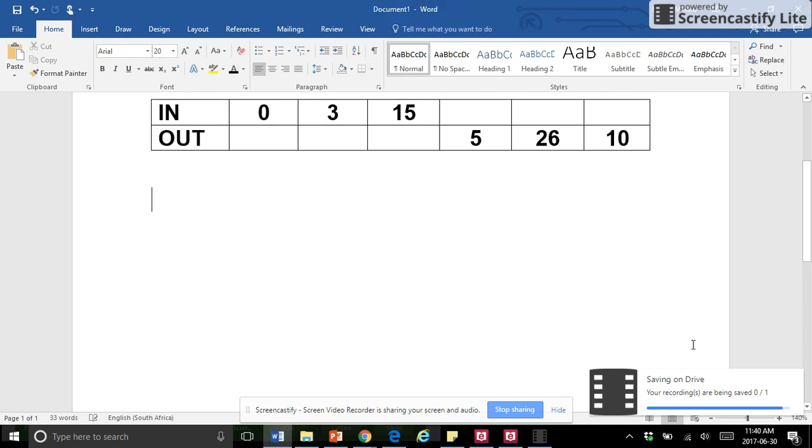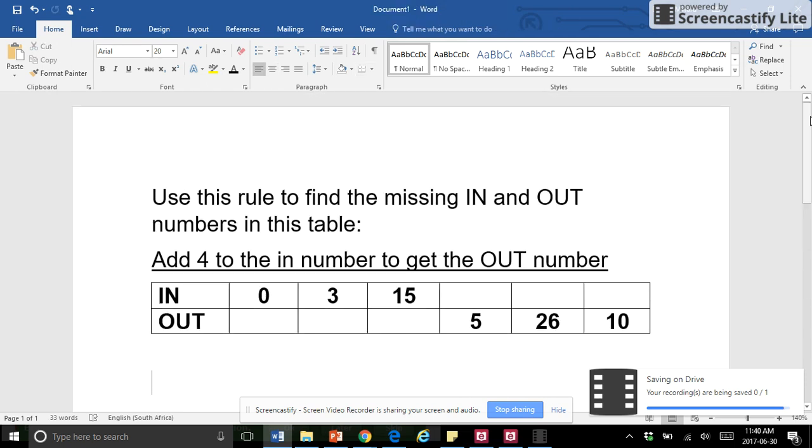Just get rid of these last ones. Okay, so now let's look at this rule. This rule says use this rule to find the missing IN and OUT numbers. Alright, we haven't done that before. Okay, so what's the rule? The rule says add 4 to the IN number to get the OUT number.